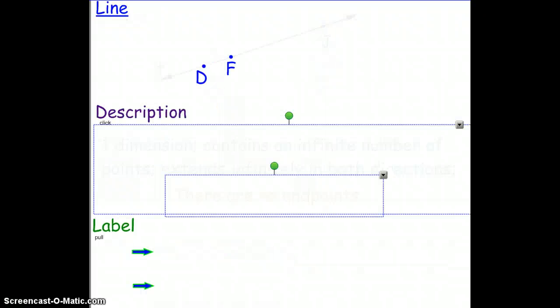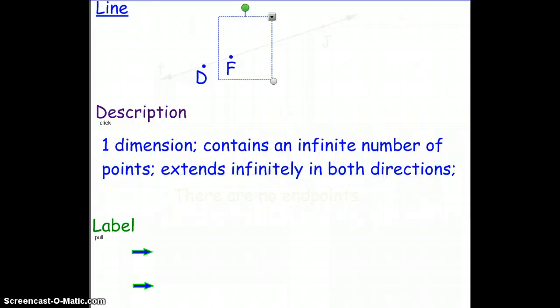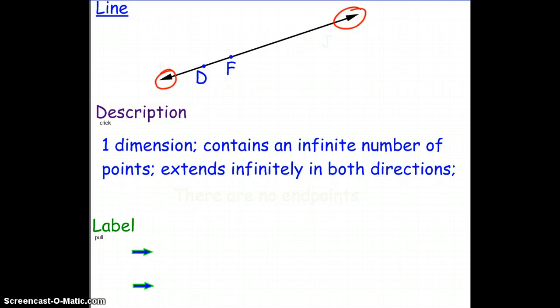Next we have a line and a line has one dimension. It contains an infinite number of points and extends infinitely in both directions. So our line contains the two points D and F. The arrows on the ends are showing us that we have a line and that they extend infinitely in both directions. Because it extends infinitely in both directions lines have no endpoints.